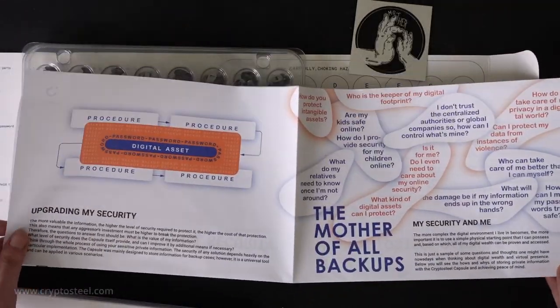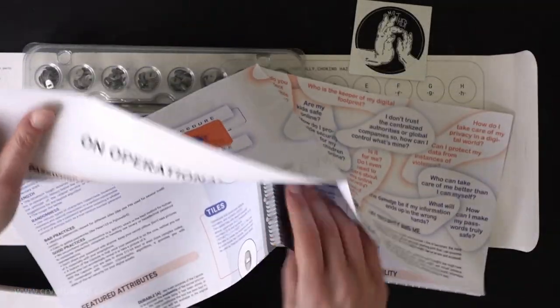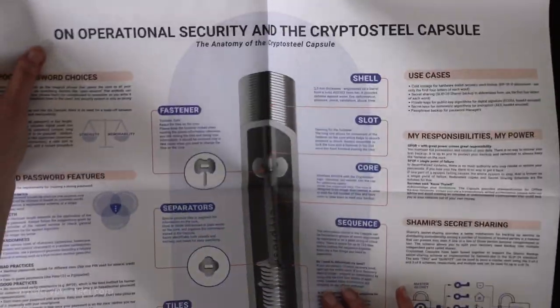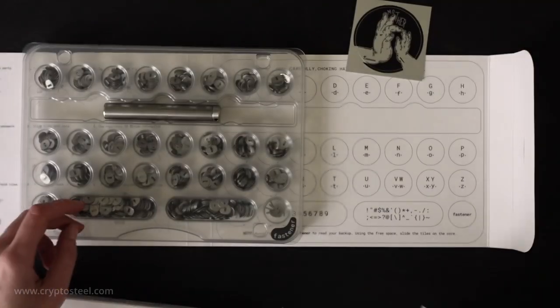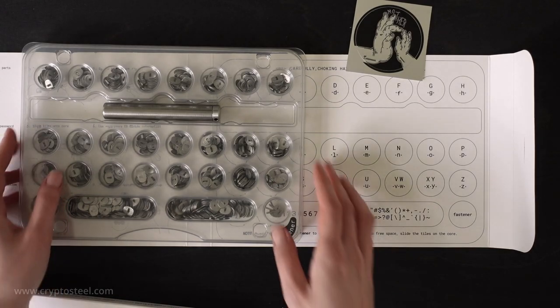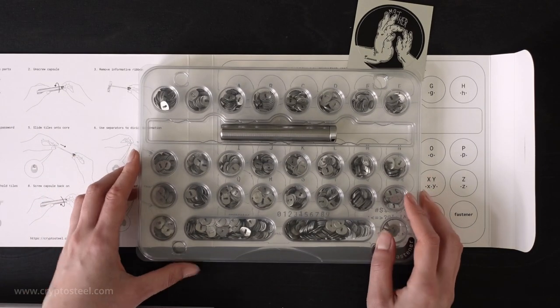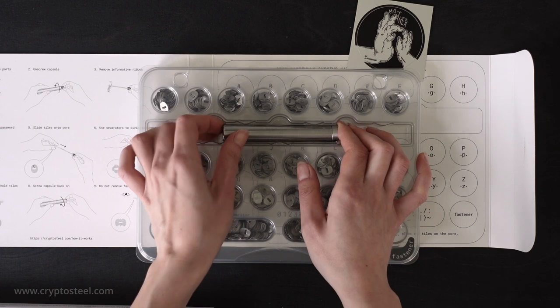The boxed set also includes exclusive artwork by international artists and an A2 poster on operation security and the CryptoSteel Capsule with lots of useful information. It's a good idea to read it before assembling the CryptoSteel Capsule device.